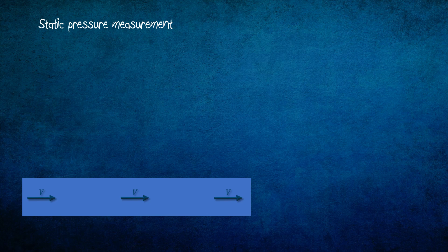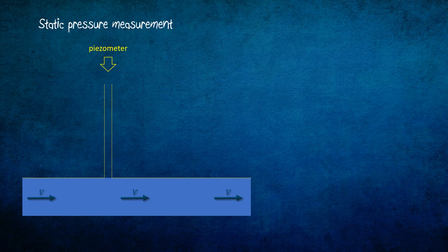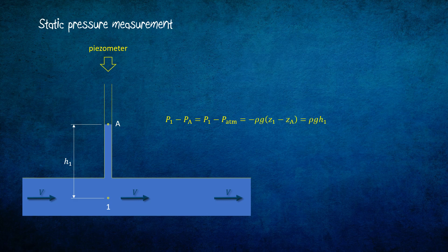To measure the static pressure of the flow, a piezometer is placed on the solid surface. Due to the static pressure on the solid surface, fluid enters the piezometer up to a certain level, A. Let's say it is at a height h1 above a point 1 in the flow. With this difference of height, the pressure at point 1 can be calculated, knowing the pressure at A is atmospheric pressure P_atm.